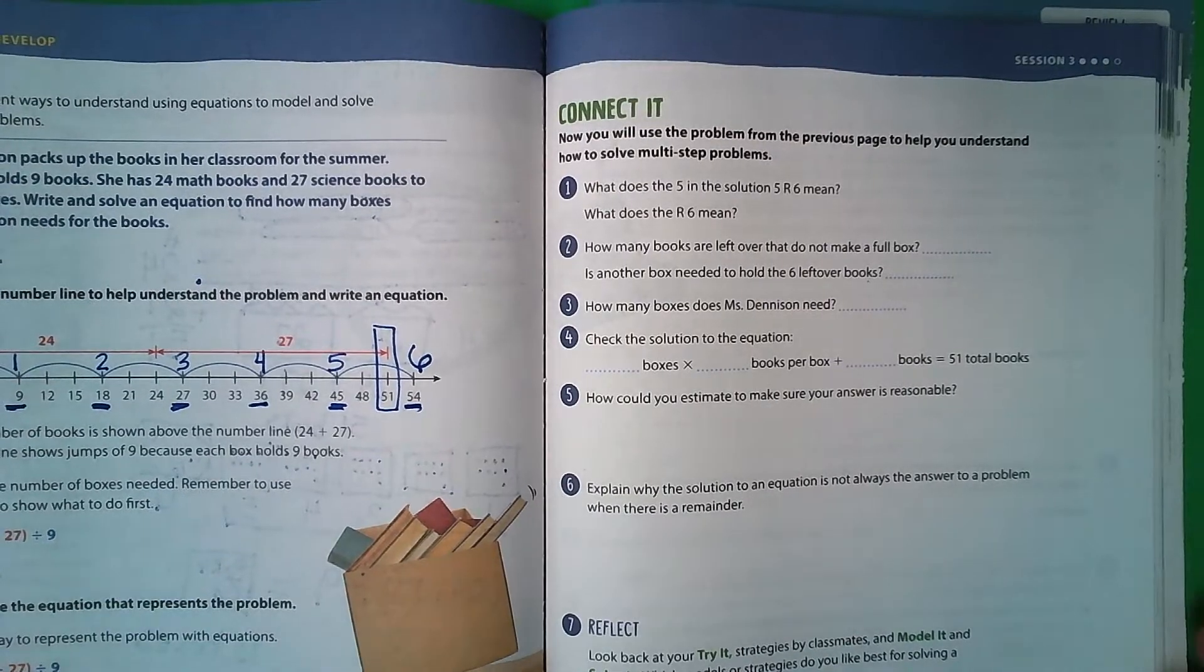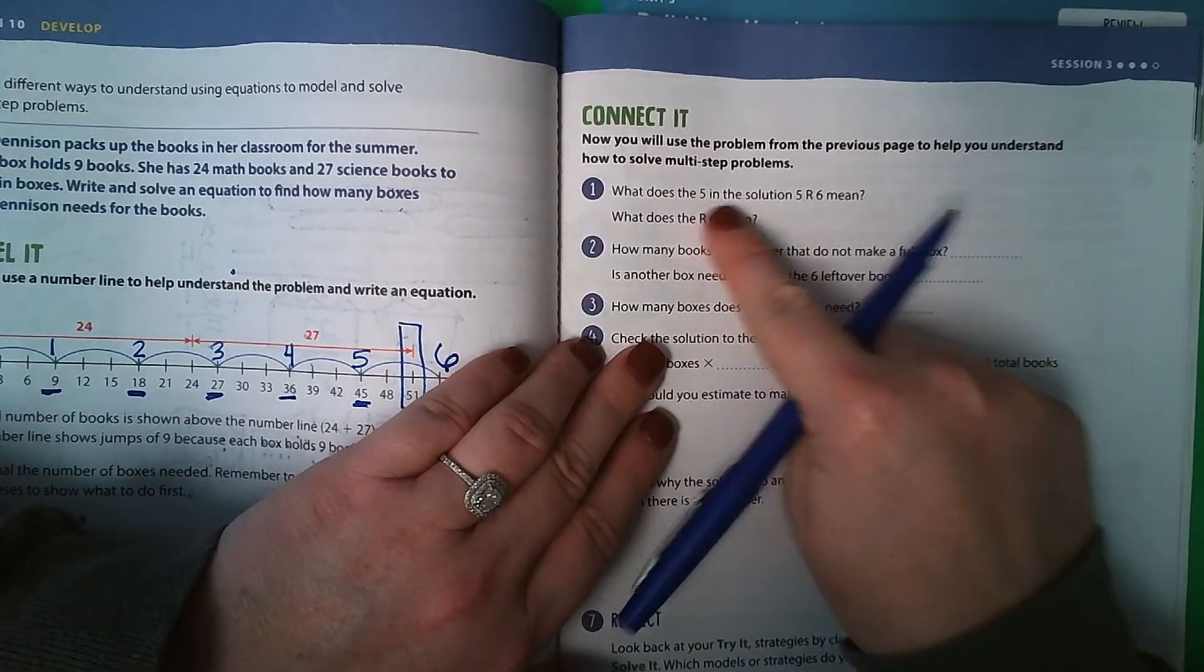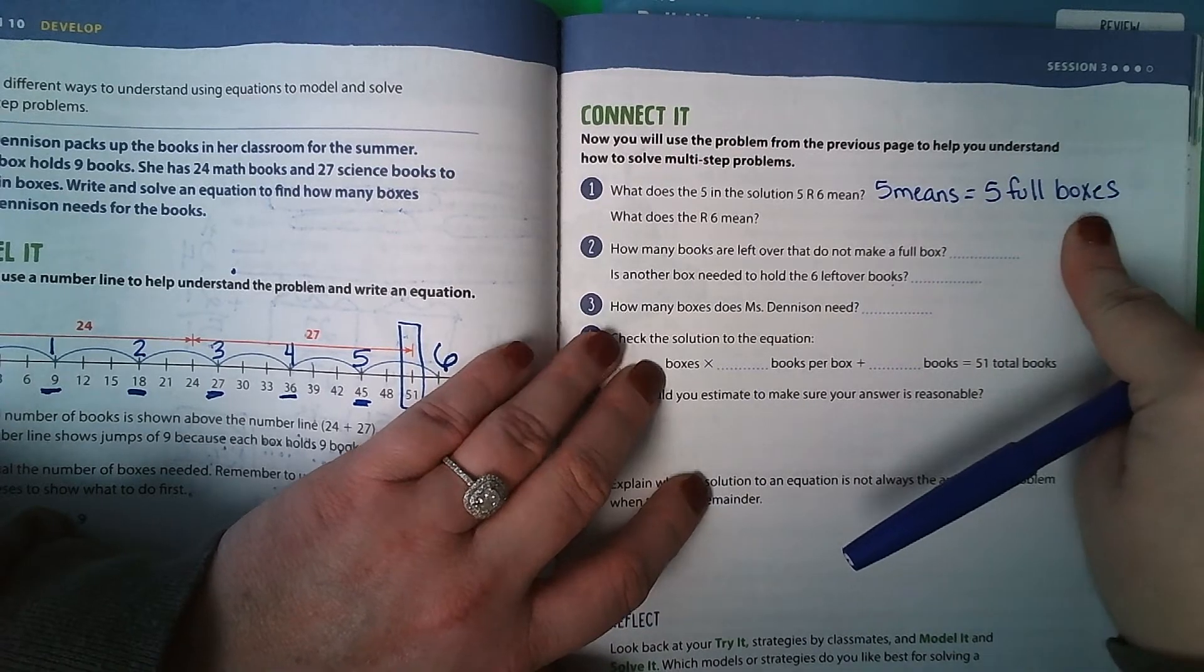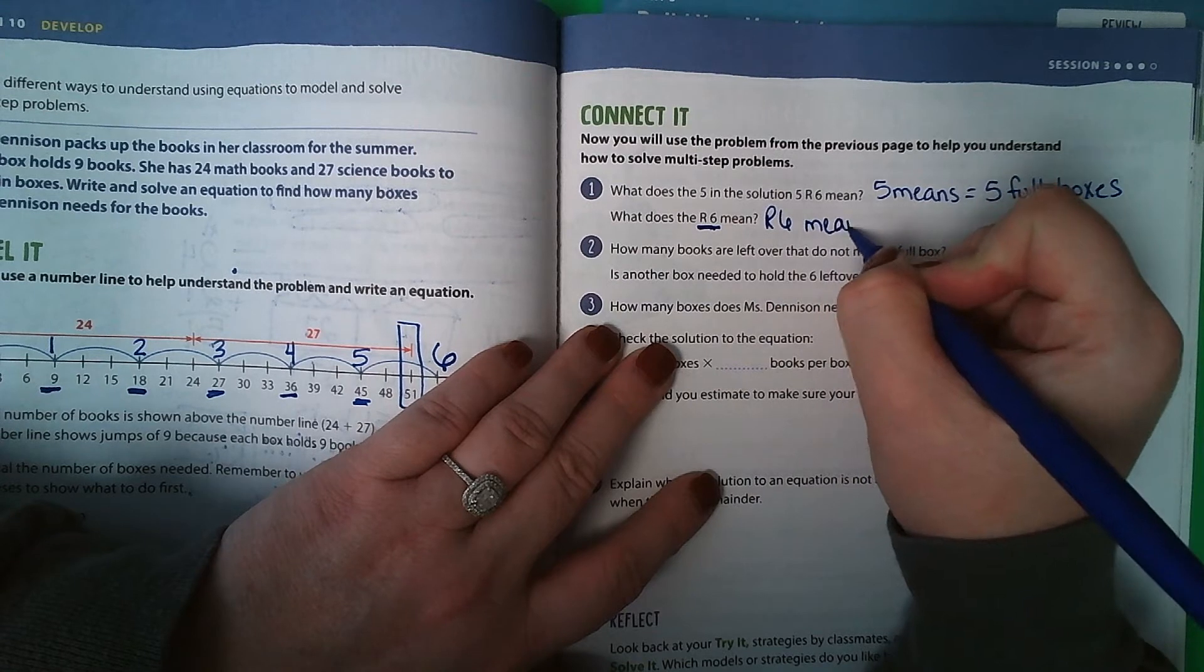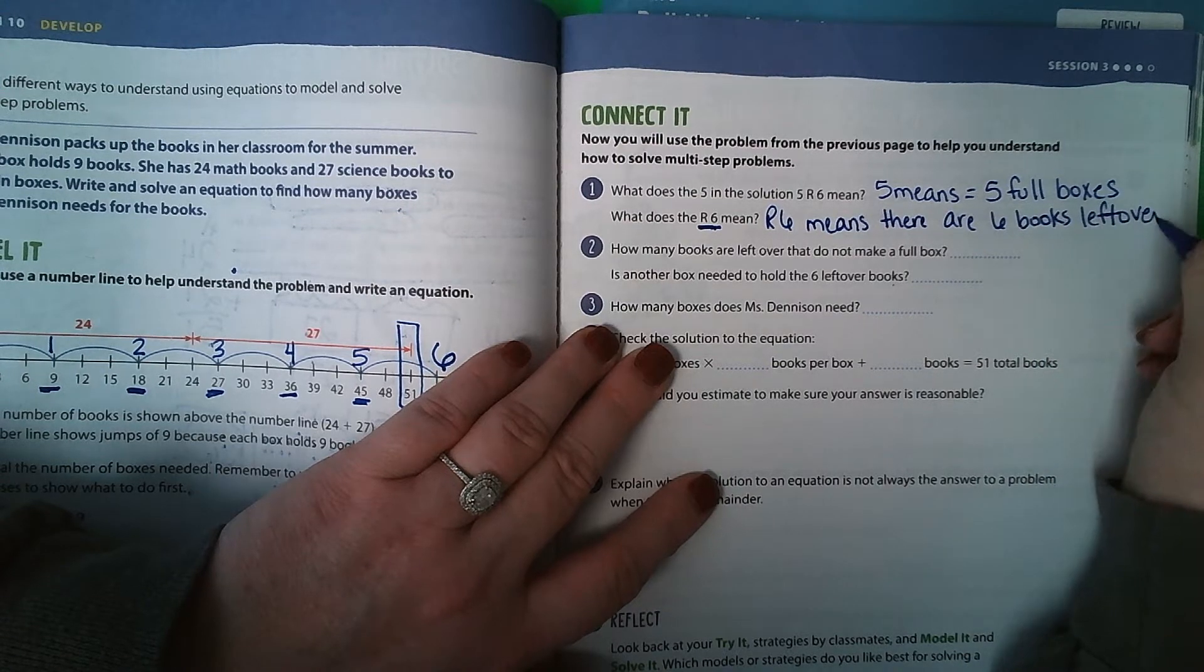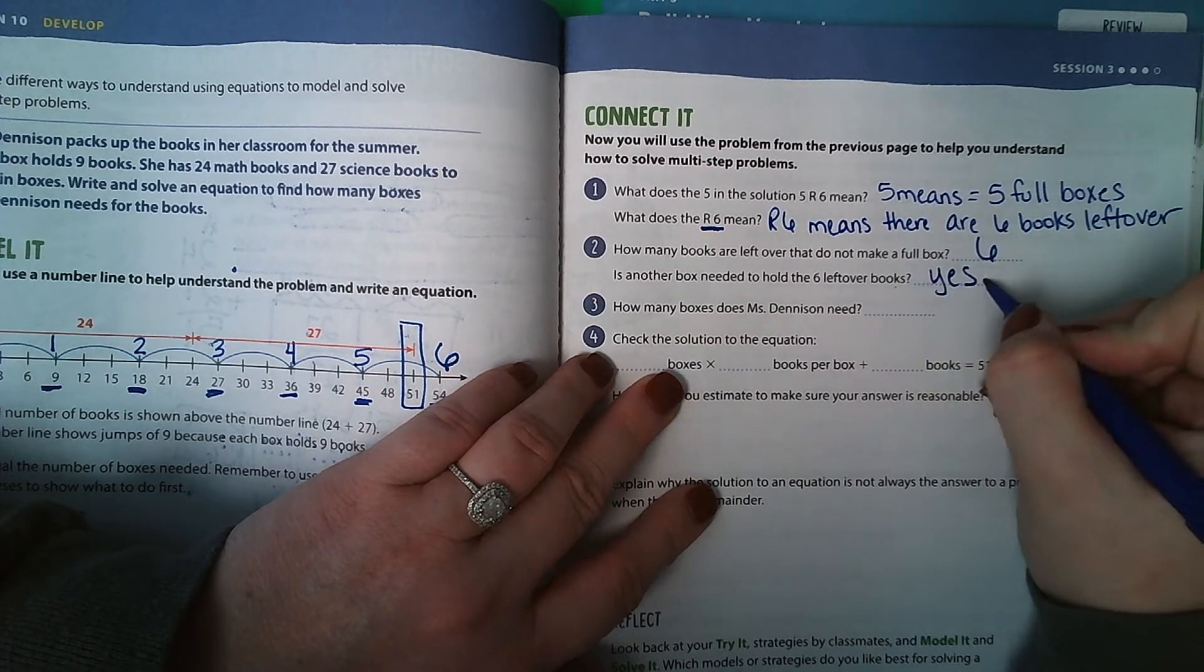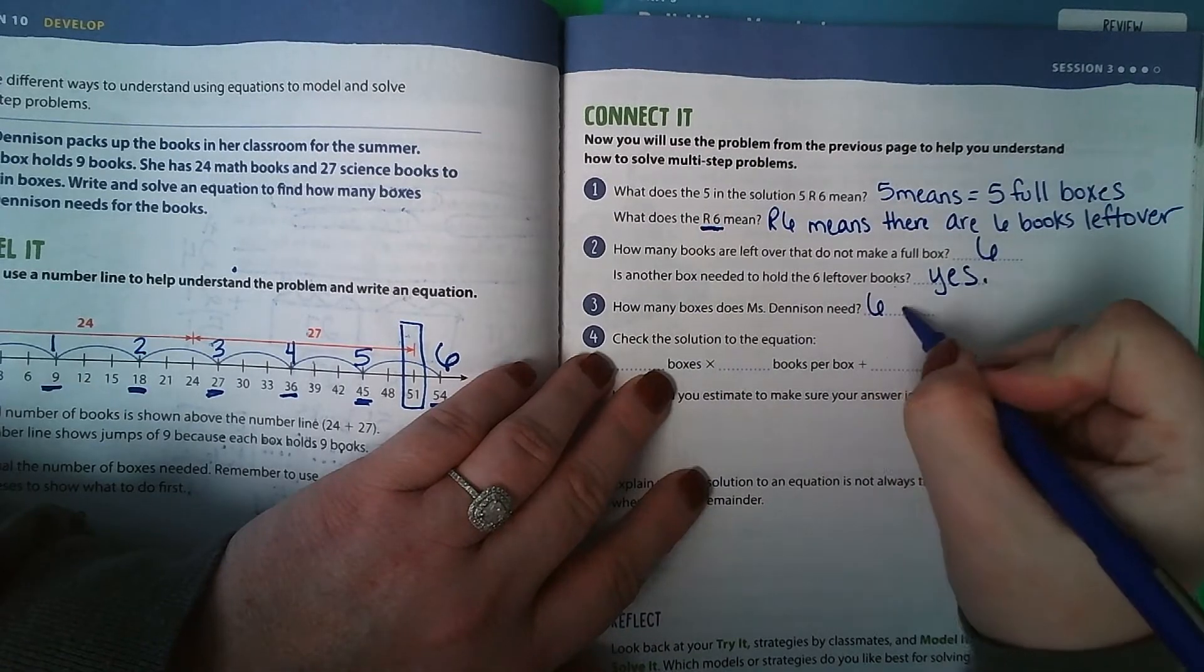Now let's take a look over here at 205. What does the 5 in the solution 5 remainder 6 mean? Well, the 5 means that there are 5 full boxes. That they have an even number of books in each of those 5 boxes. What does the remainder 6 mean? Well, the remainder 6 means there are 6 books left over. How many books are left over that do not make a full box? 6. Is another box needed to hold the 6 leftover books? Yes, we do need another box. So how many boxes does she need? Well, she has 5 full and one that's partially full, so she'll need 6 boxes.